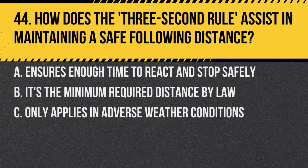Question 44. How does the three-second rule assist in maintaining a safe following distance? A. Ensures enough time to react and stop safely. B. It's the minimum required distance by law. C. Only applies in adverse weather conditions. Answer: A. Ensures enough time to react and stop safely. This rule helps maintain a safe distance from the vehicle ahead.